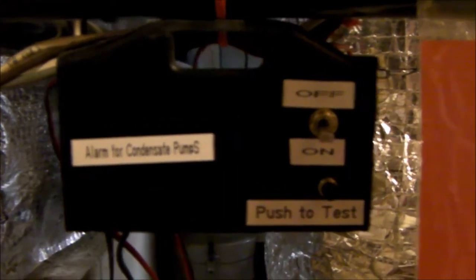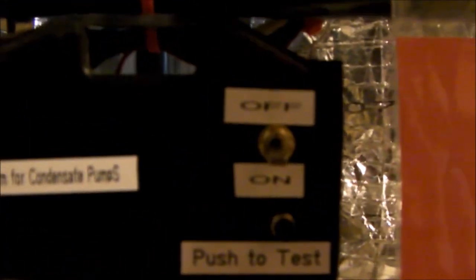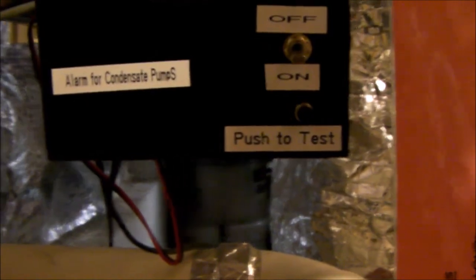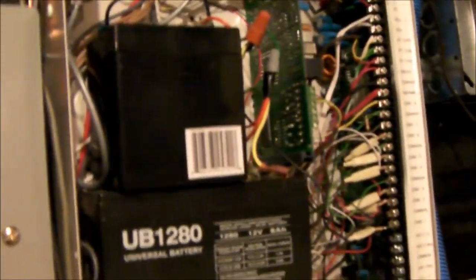Here's a close-up of my control panel. It's really simple. I have an on-off switch here, and then I push the test, push the test, on-off. And I draw my power from my security system alarm box. I've got double batteries in there.